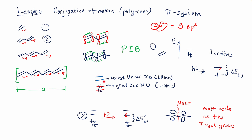You're going to have bonding and antibonding orbitals, and the highest occupied molecular orbital — referred to as HOMO — and the lowest unoccupied molecular orbital — referred to as LUMO. The difference between those two levels is the energy involved in those transitions.